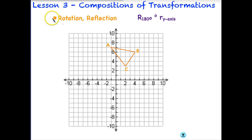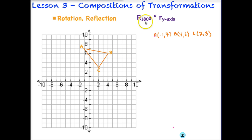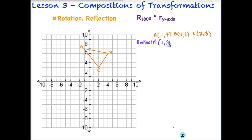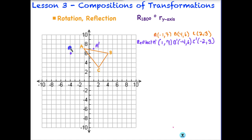Let's do a final transformation. In this example we have the same triangle, but this time our composition says we are going to reflect over the y-axis, and then this big 'R' means we are going to rotate it 180 degrees. When I reflect over the y-axis, just the x changes signs. So A' becomes (1, 7), B' becomes (-4, 6), and C' becomes (-2, 3). Plotting: A prime at (1, 7), B prime at (-4, 6), and C prime at (-2, 3).